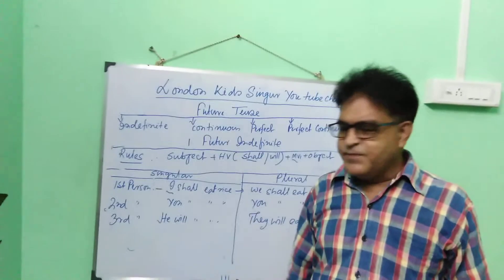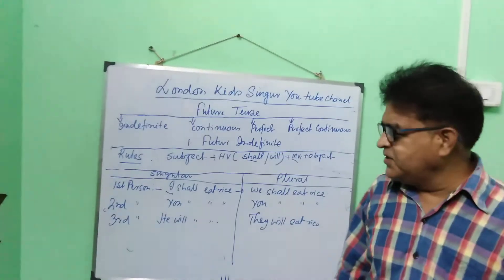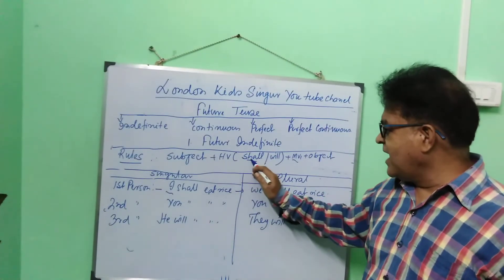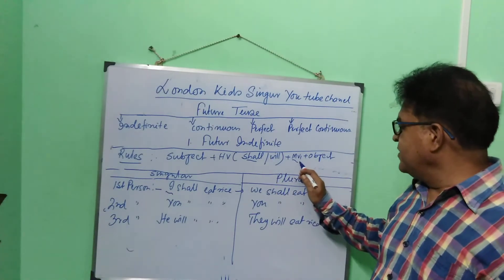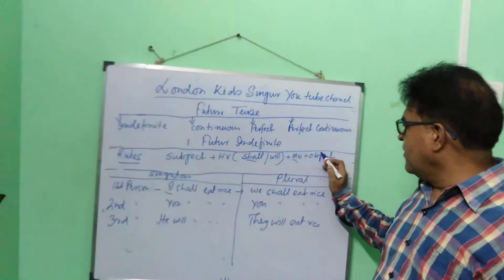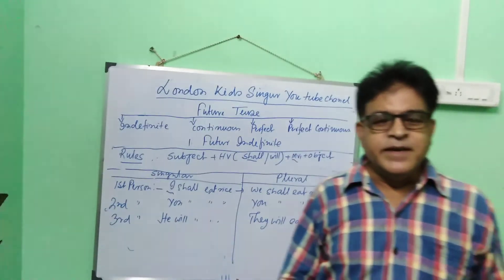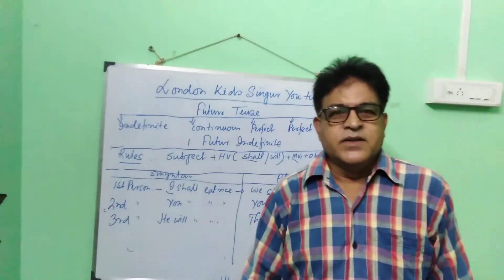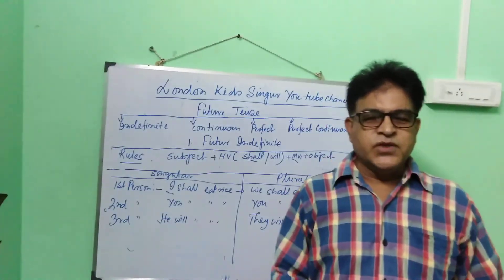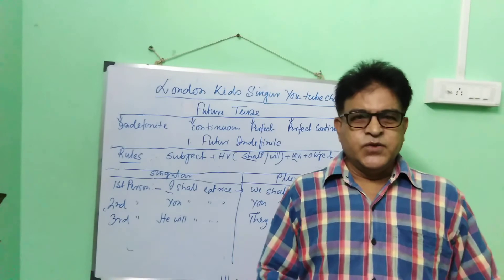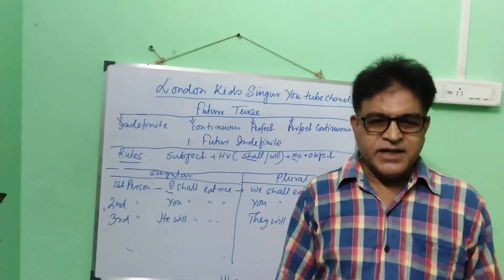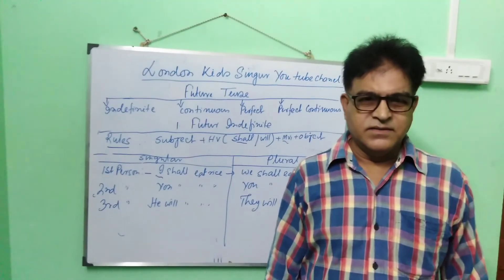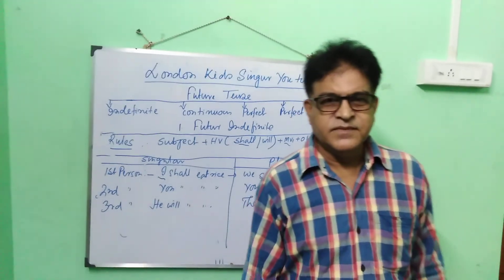The rule is very simple, just keep it in mind: Subject plus helping verb shall or will plus MV1 plus Object. If you like this video, please don't forget to share, subscribe, and click the bell icon. Thank you.